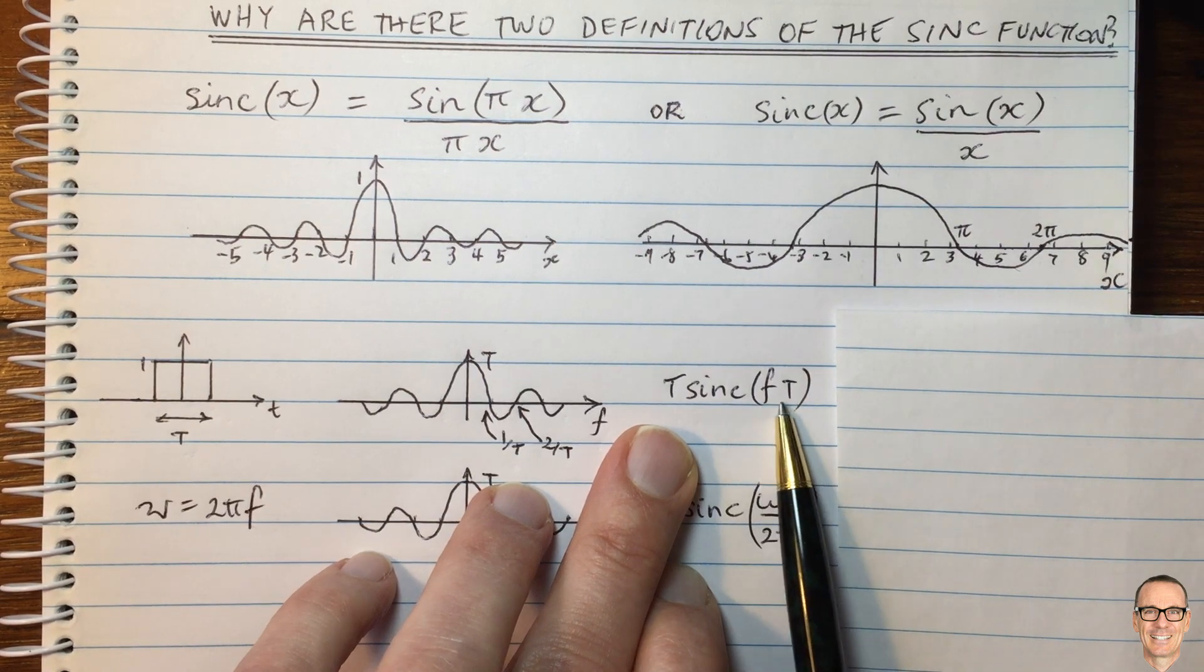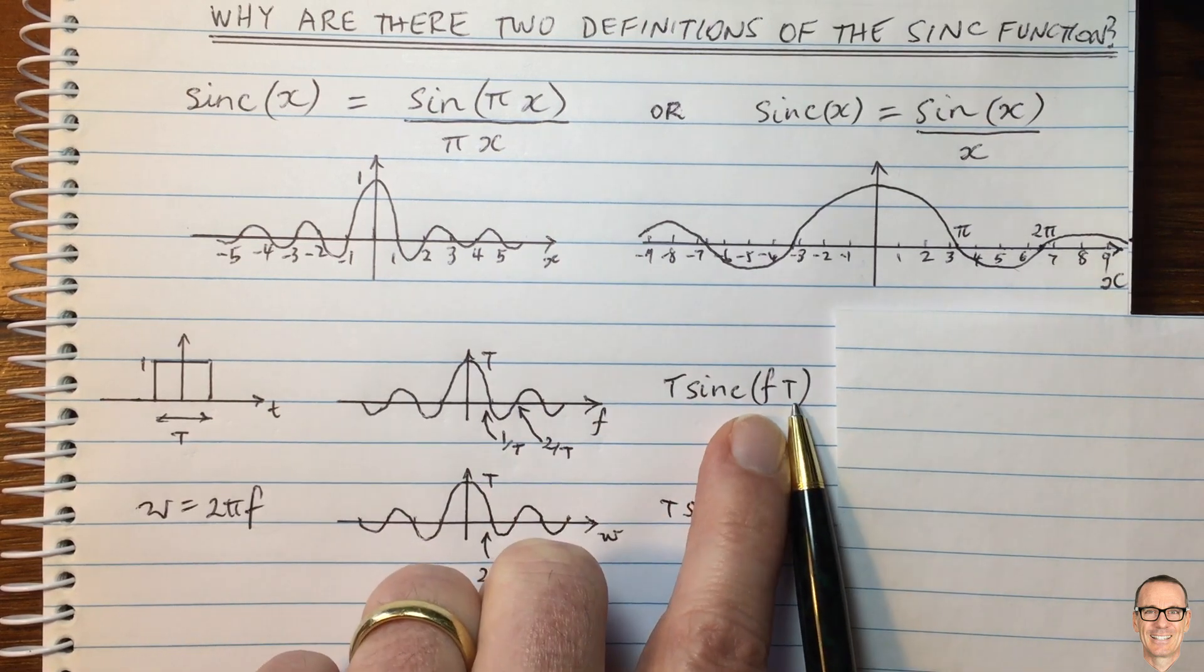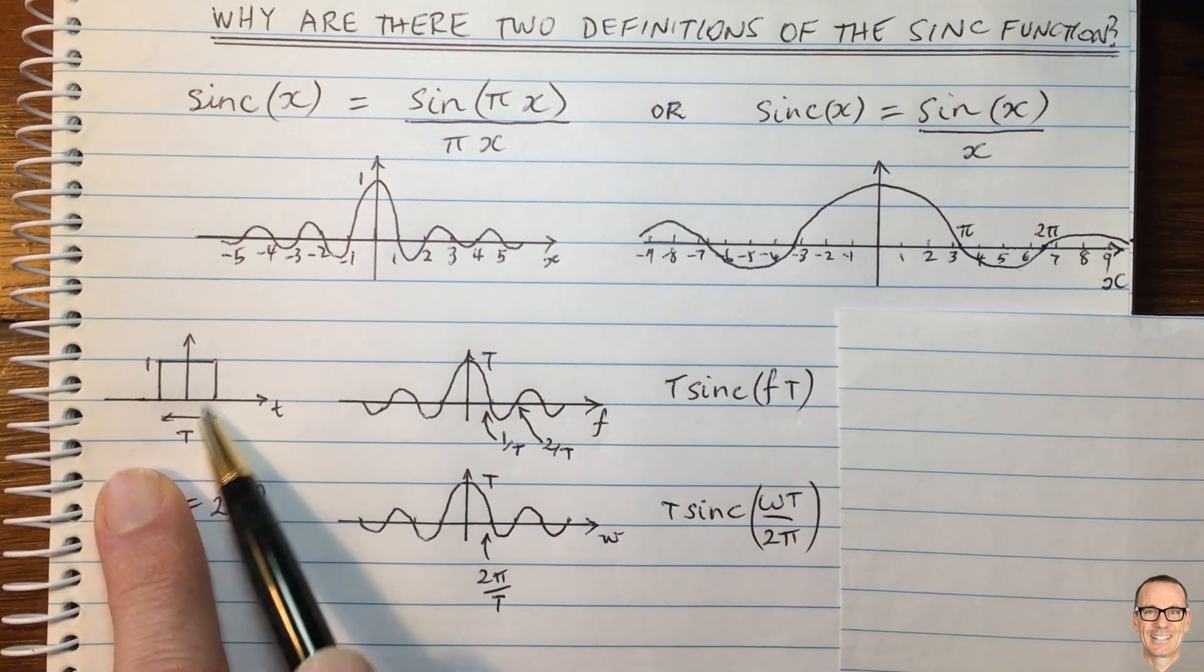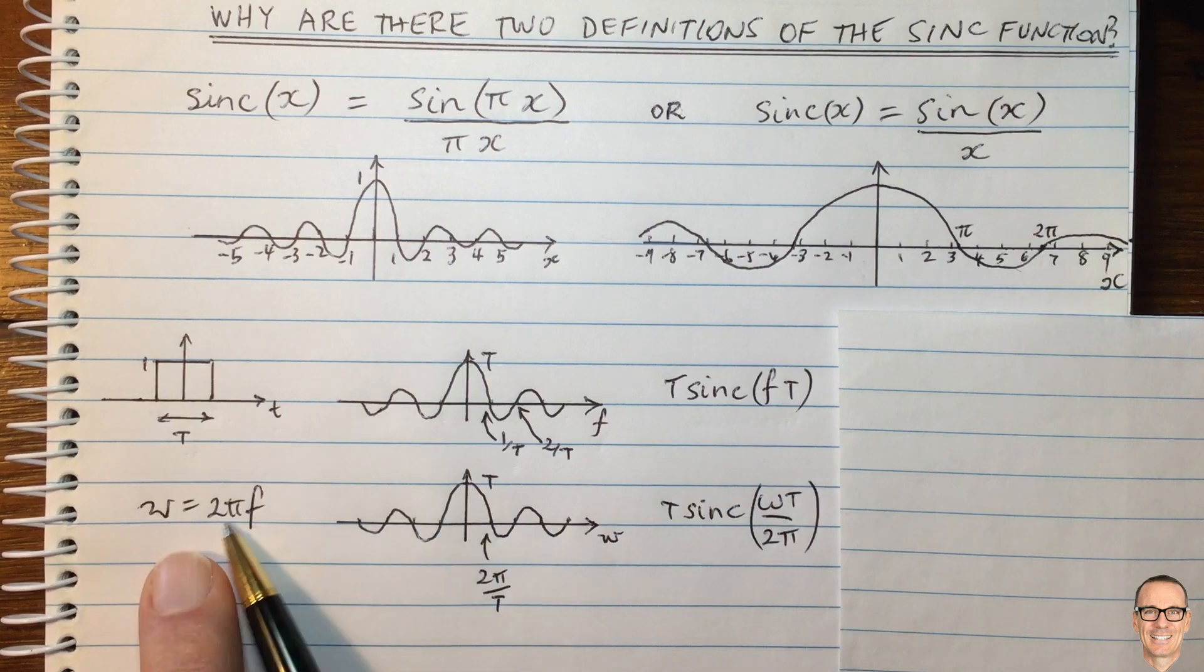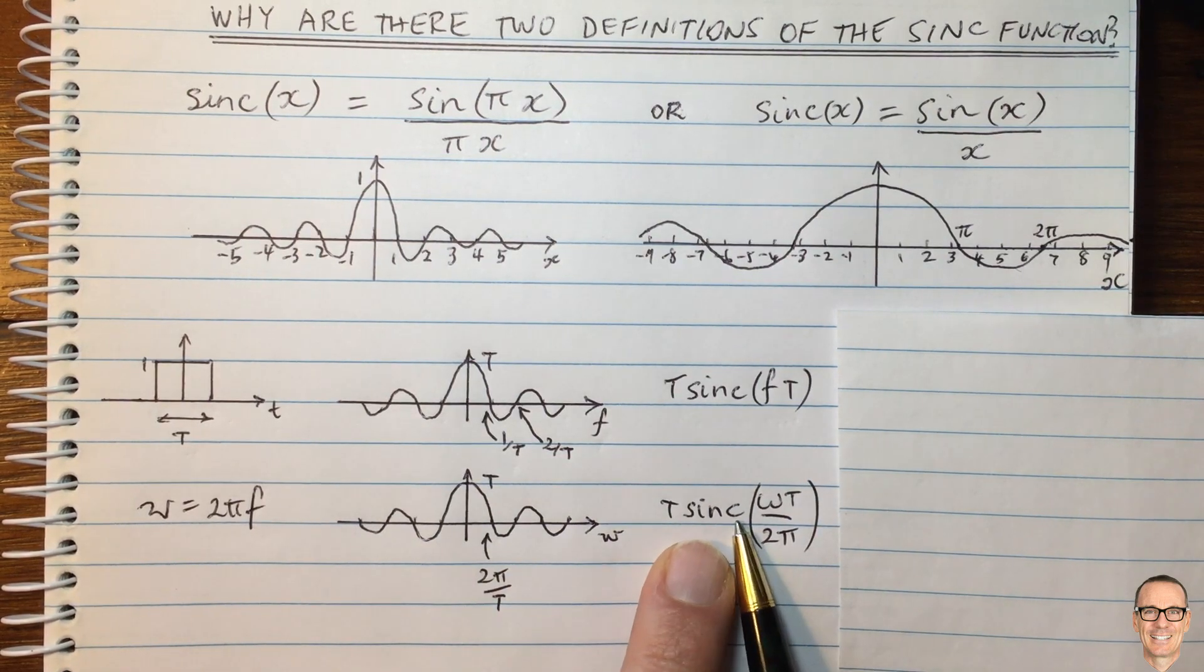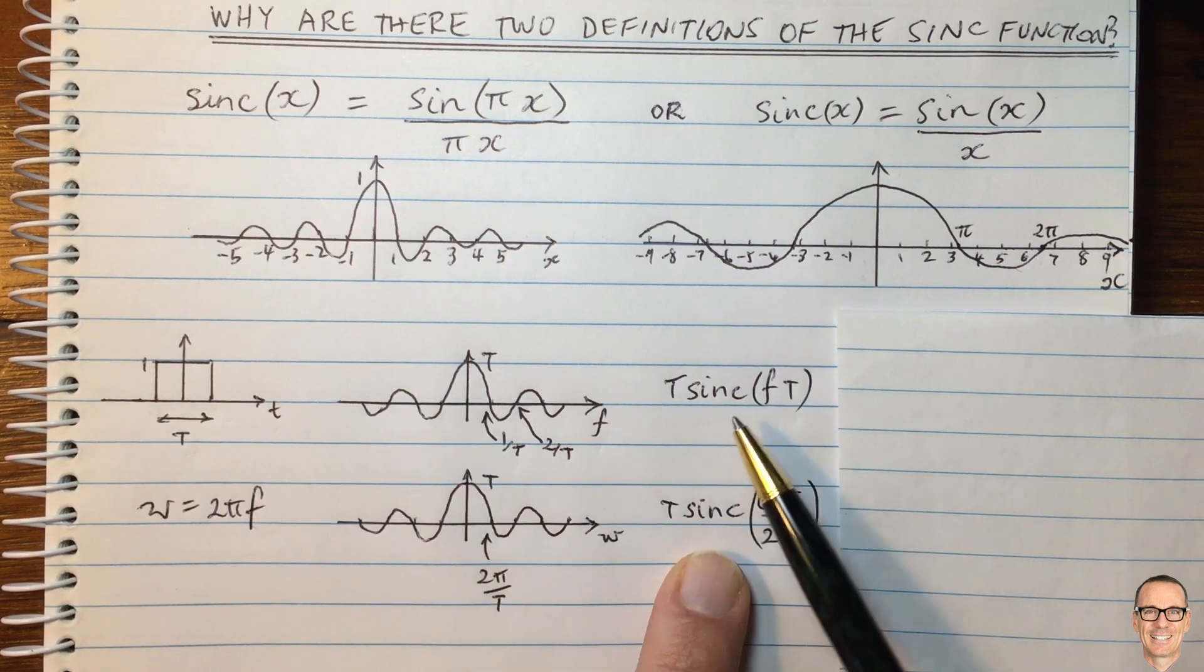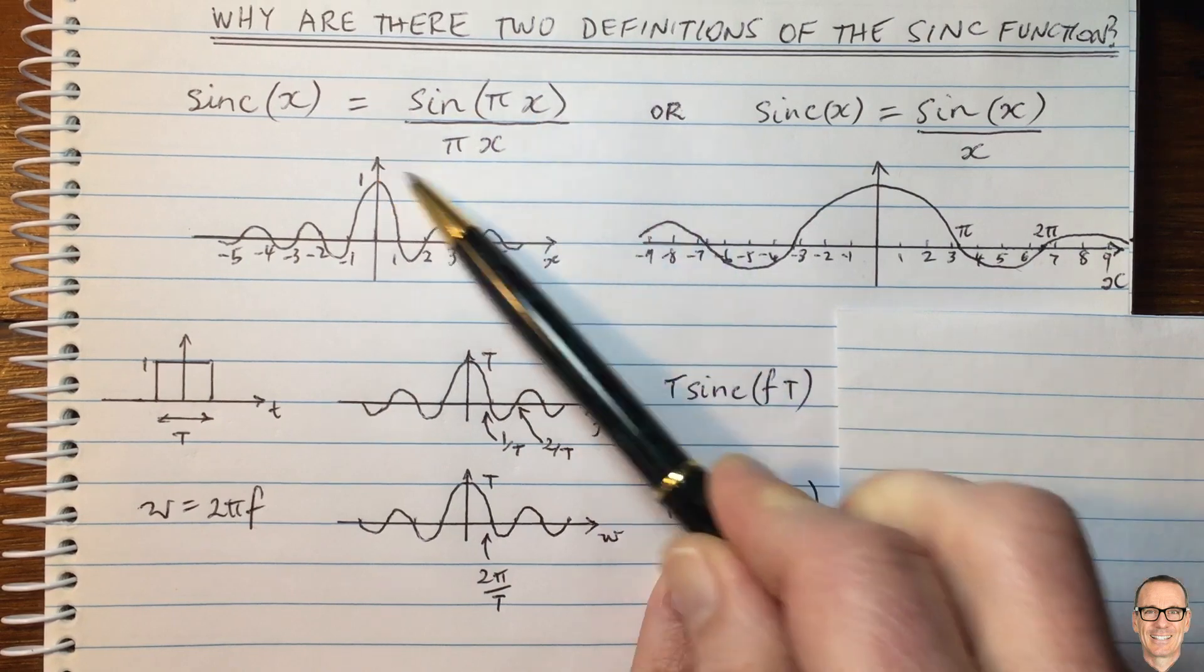You're just simply seeing the relationship between f, the frequency, and T, the width of the base. If you wrote this by substituting in omega equals 2pi f, then you'll see that it equals T sinc omega capital T divided by 2pi. Both of these are using this left-hand definition.